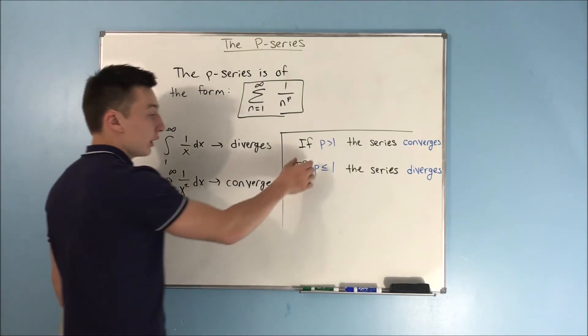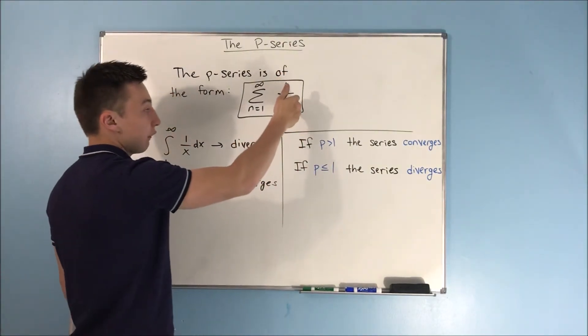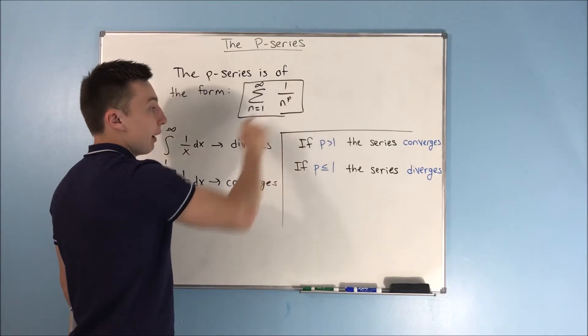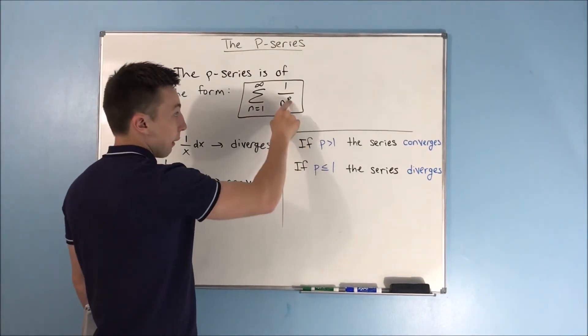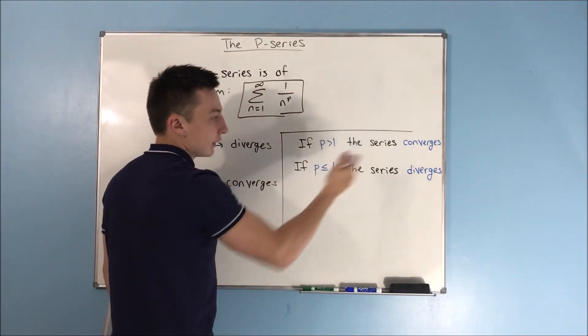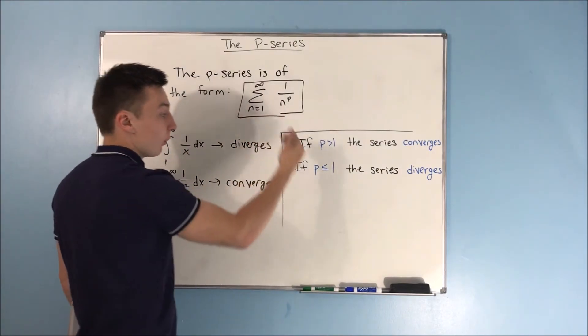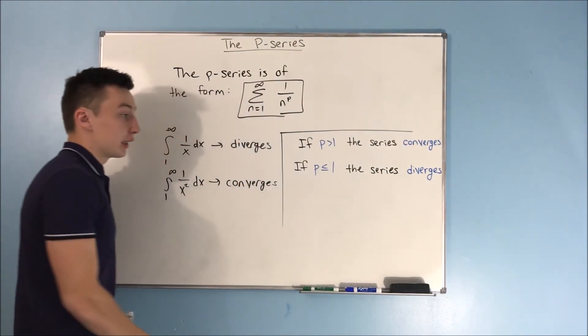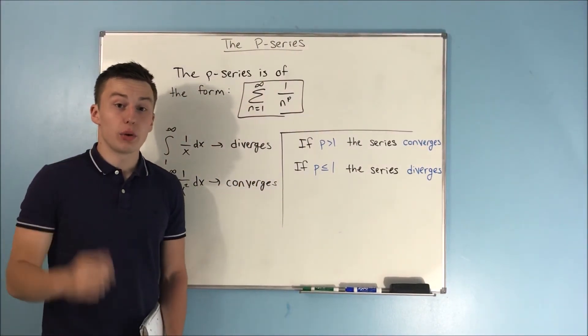So, that's all you really need to know. If you have this kind of form, where you have 1 over n to a power, if that p, if that power, is greater than 1, then the series is going to converge. If that power is less than or equal to 1, the series is going to diverge, and that's going to do it for this video.